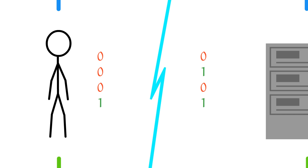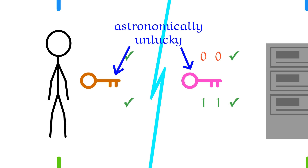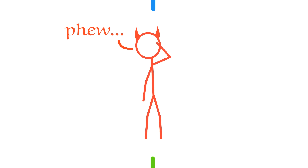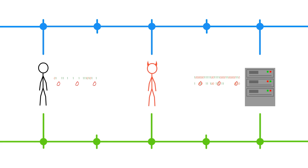But how do you and the server know if the eavesdropper was messing with the qubits? How do you know if these bits are safe to use? You randomly pick half of your bits to compare. If they're the same, you and the server know that the other half is the same as well, unless you're astronomically unlucky. To better your odds, you use more qubits, so small mistakes from the eavesdropper are more likely to be noticed. If you ever notice a problem, you toss everything out and try again.